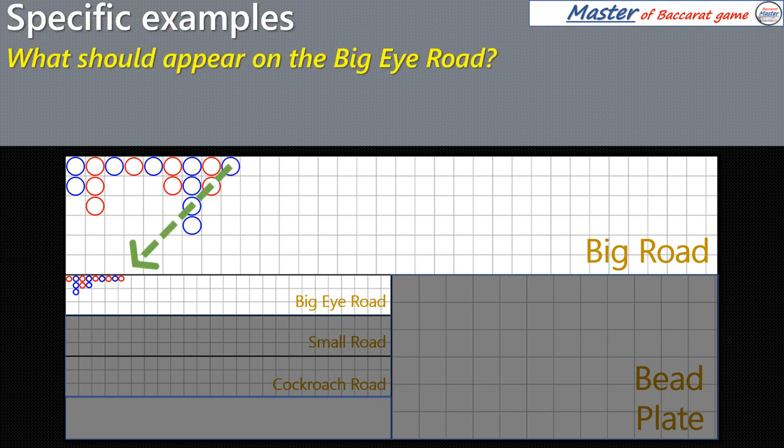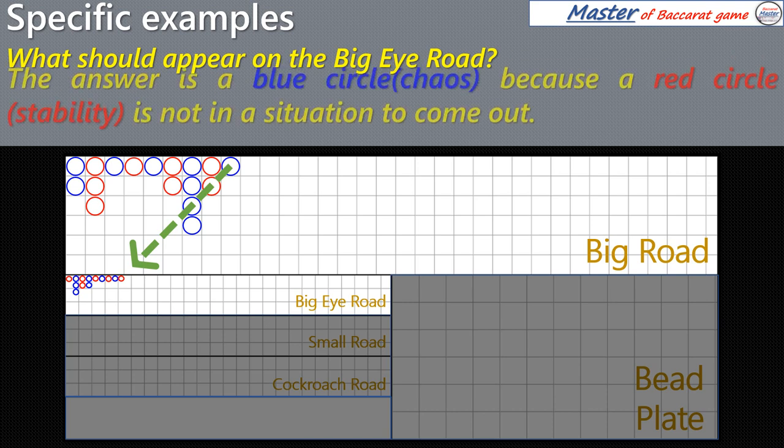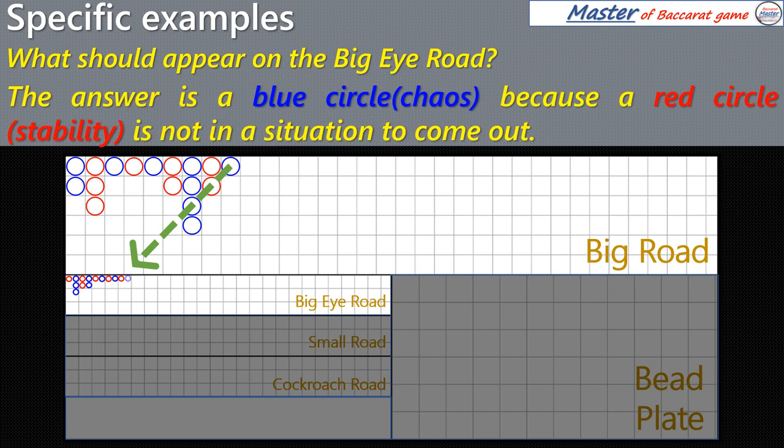What should appear on the Big Eye Road? The answer is a blue circle, because a red circle is not in a situation to come out.